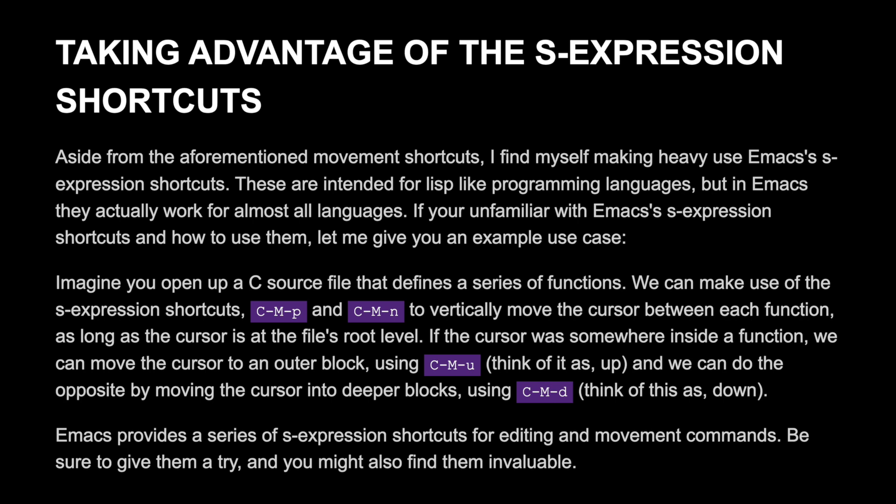Imagine you open up a C source file that defines a series of functions. We can make use of s-expression shortcuts Ctrl+Meta+P and Ctrl+Meta+N to vertically move the cursor between each function, as long as the cursor is at the file's root level. If the cursor is somewhere inside a function, we can move the cursor to an outer block using Ctrl+Meta+U. Emacs provides a series of s-expression shortcuts for editing and movement commands — be sure to give them a try as you might find them invaluable.